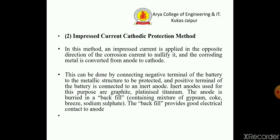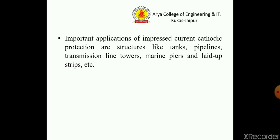The positive terminal of the battery is connected to an inert anode. Inert anodes used for this purpose are graphite and platinized titanium. The anode is buried in a backfill, which provides good electrical contact to the anode. Important applications of impressed current cathodic protection are structures like tanks, pipelines, transmission line towers, marine piers, and laid-up ships.